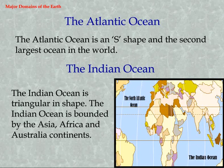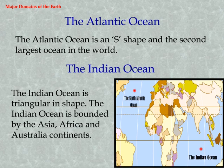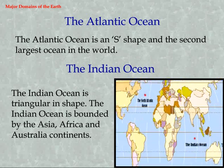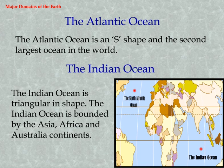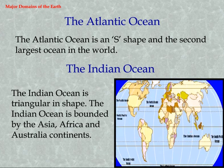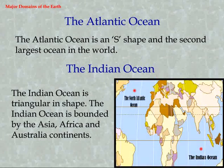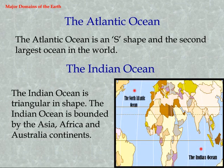The Atlantic Ocean is S-shaped and the second largest ocean in the world. The Indian Ocean is triangular in shape and is bounded by Asia, Africa, and Australia.